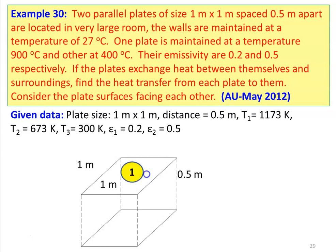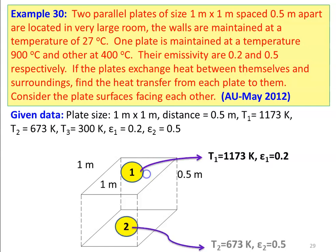This is the arrangement of the plates: the first surface at the temperature of 1173 Kelvin and emissivity of 0.5. The third surface, which is the wall of the large room, is at temperature 300 Kelvin, and the third surface is re-radiating.